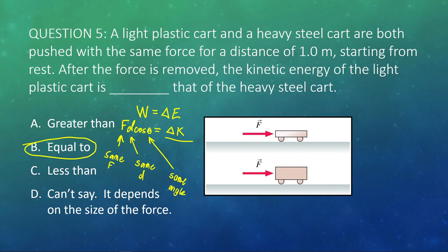That brings us to the end of Lecture 28. When we jump into Lecture 29, we are going to reintroduce all of our energy types — kinetic, gravitational potential, elastic potential, and thermal — and define each of them with an equation. We will then put all of that information together to talk about conservation of energy. Until then, thanks for watching, and have a great day.